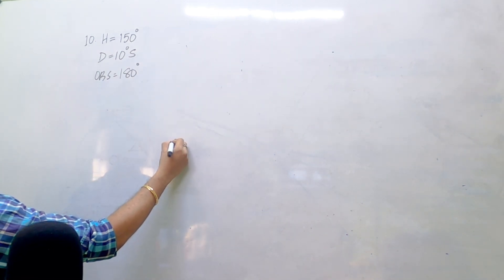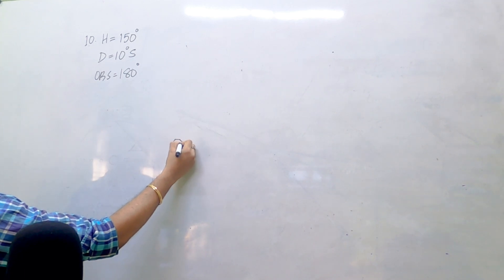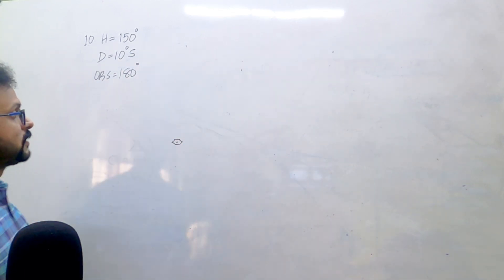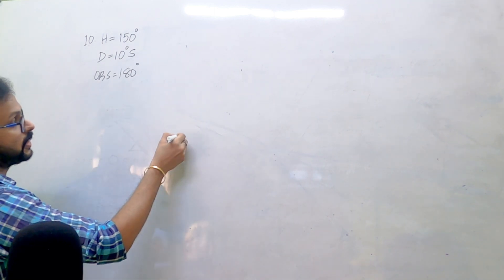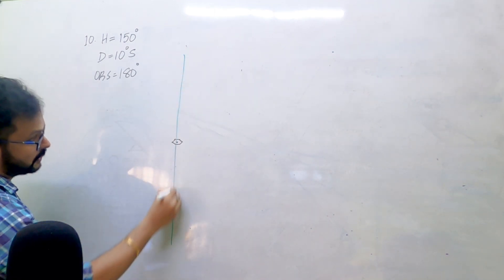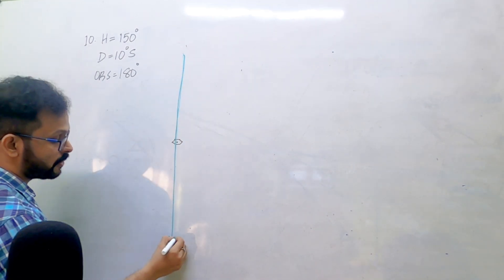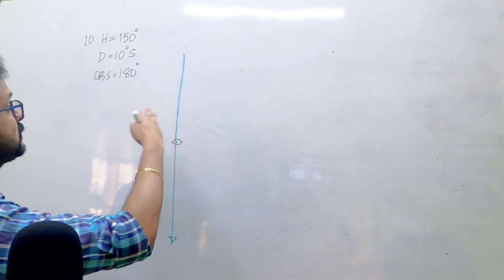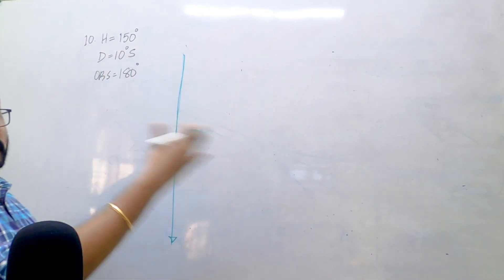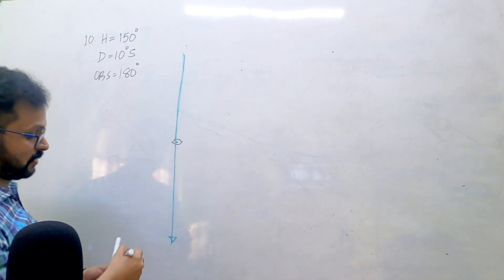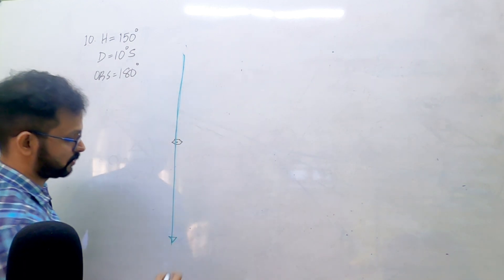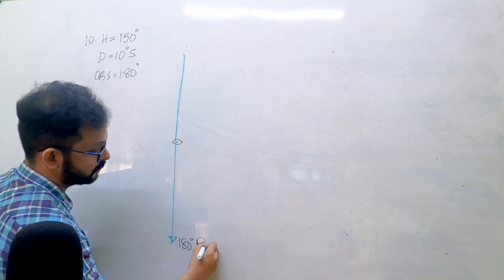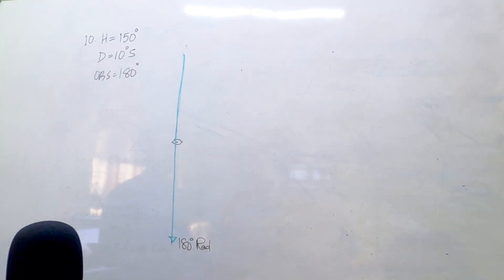Let's draw the diagram first before we draw the indication. The OBS radial is 180. Remember, all navigation aids are referenced to magnetic north, which means an OBS of 180 is magnetic. The radial is always magnetic from the station. Therefore, this 180 degree OBS radial is magnetic.